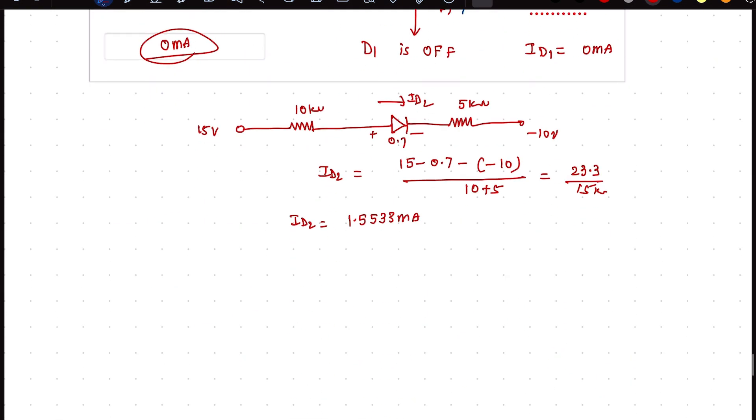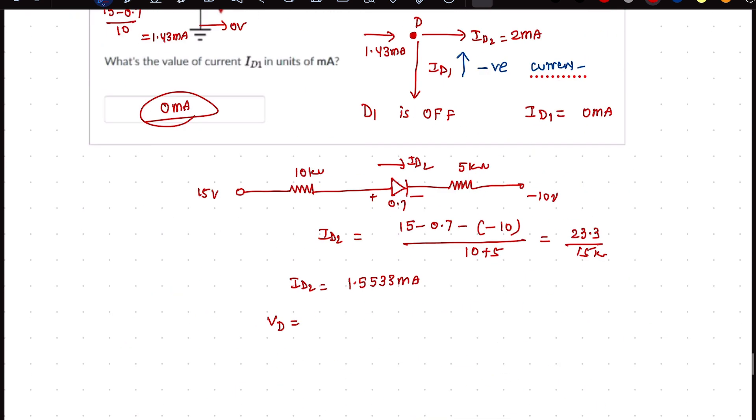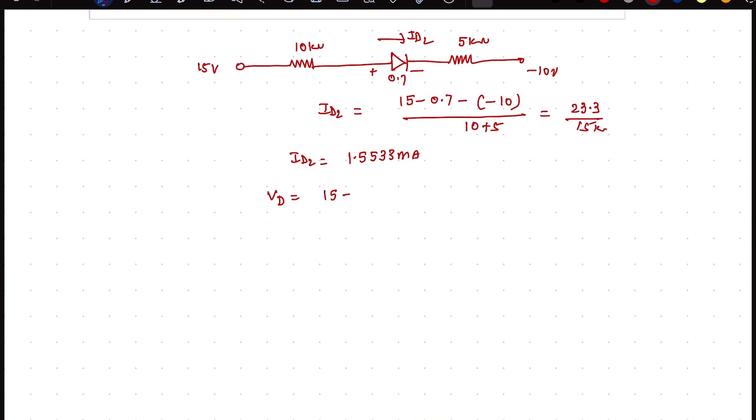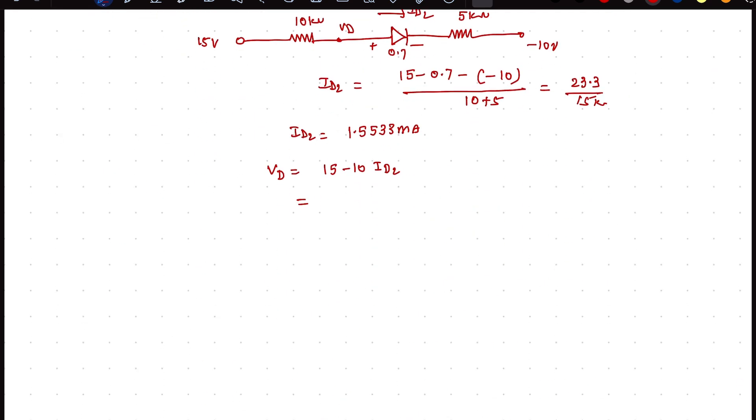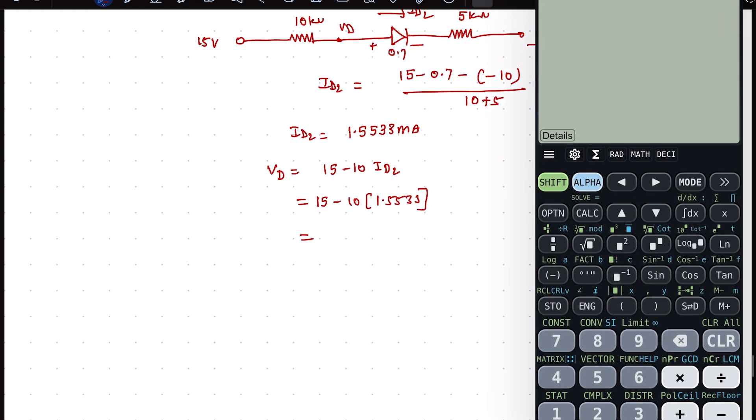Let's check if our assumption is correct by calculating the voltage at point D. VD is 15 - 10 times ID2. In this case it is a plane circuit, so VD is 15 - 10 times 1.5533 milliamperes.